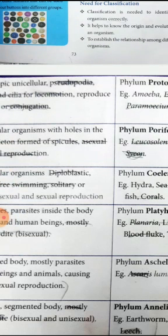How do we classify? The taxonomic hierarchy is: Kingdom, Phylum, Class, Order, Family, Genus, and Species.